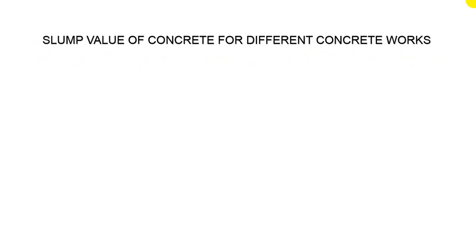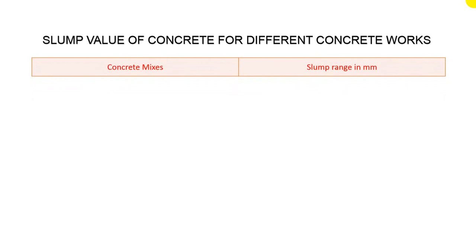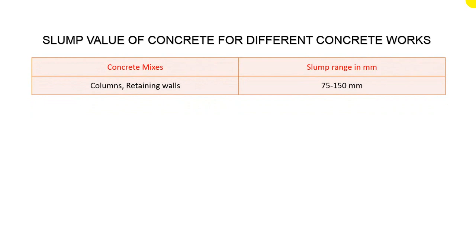Slump value of concrete for different concrete works. The concrete mix and slump range will be in millimeters. For columns and retaining walls, our slump value should be 75 millimeters to 150 millimeters. This is the suitable value for column concrete and retaining wall concrete — for members in compression. A column is a compression member and a retaining wall is also a compression member. So for that, we maintain the slump range of 75 to 150 millimeters.